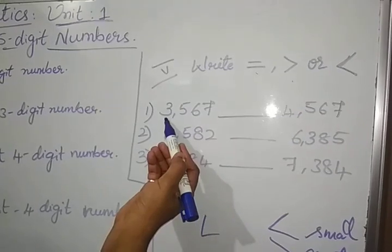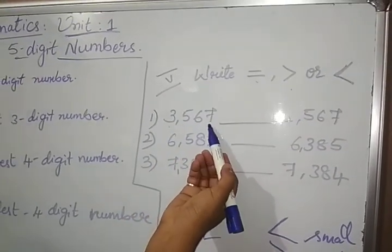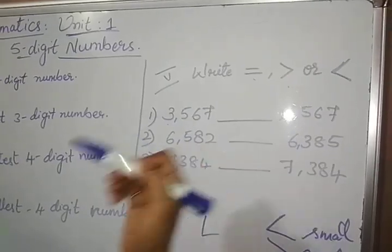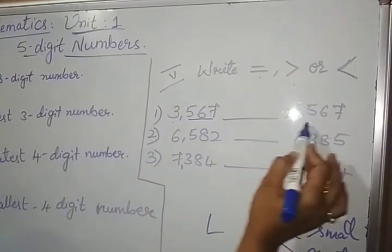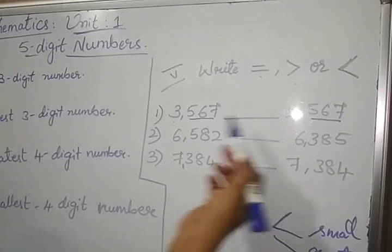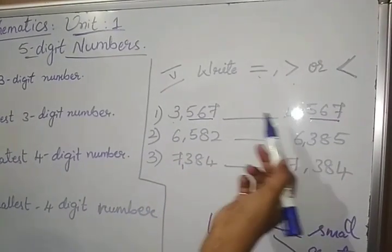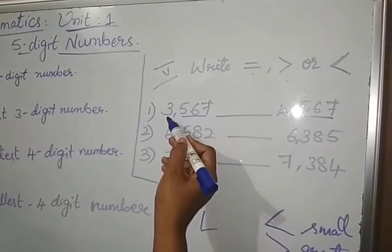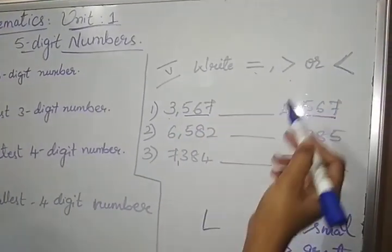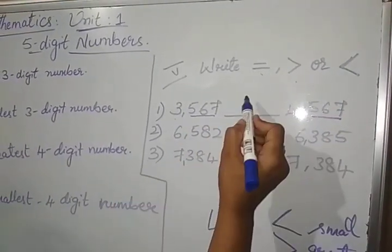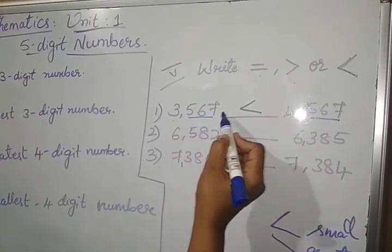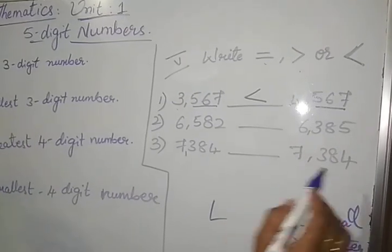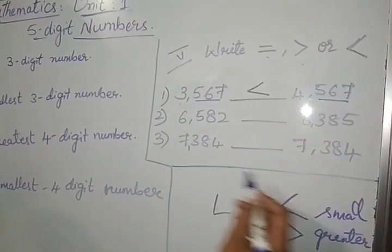Here the number you read, 3,567 dash 4,567. 565 is same, go for 1000 place here, 3, here 4. Which one is greater? 4 is greater, 3 is smaller. So you have to write this sign, that is 3,567 is smaller than 4,567.